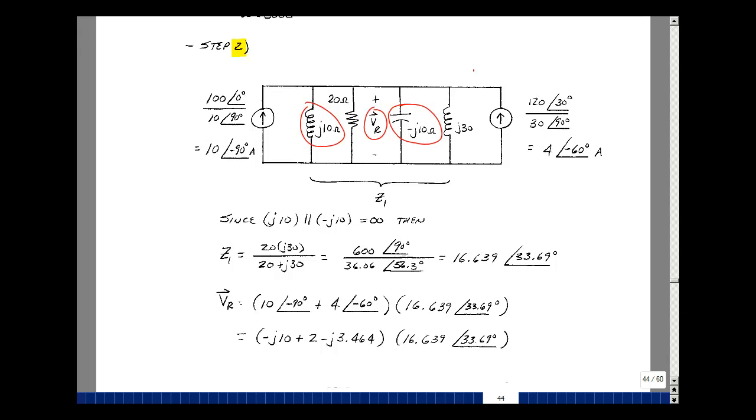Okay, the current that flows into the impedance Z is going to be this current plus this current. So it'd be 10 at angle minus 90 and 4 at angle minus 60. As we're adding these two, I have to put them into rectangular form. So let's convert this, then, this would be a minus J10.